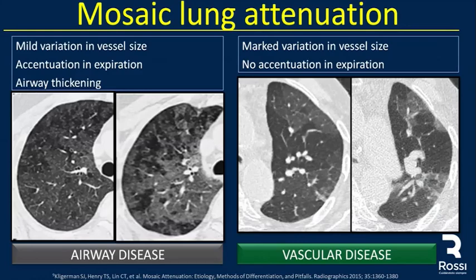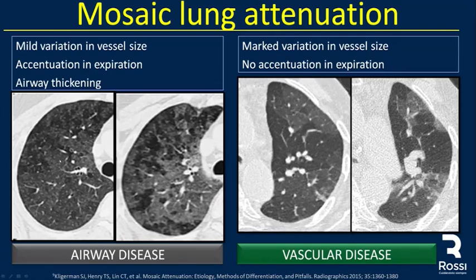Mosaic lung attenuation has two main causes, and the most common is airway disease. In an inspiratory CT we see patchy areas of low and high attenuation — a mosaic lung attenuation pattern. When we perform the expiratory CT, we see areas of air trapping with diminished vascularity. Key descriptors include mild variation in vessel size, accentuation in expiration, and some airway thickening.